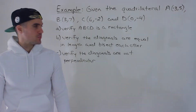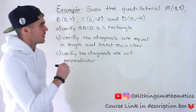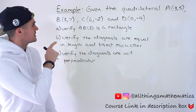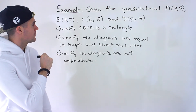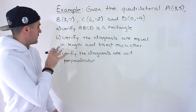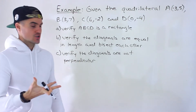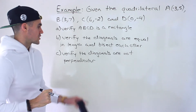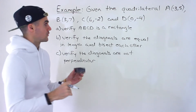Welcome back everyone, Patrick here. Moving on to the next question dealing with quadrilaterals. We are given a quadrilateral with vertices A(-3, 5), B(3, 7), C(6, -2), and D(0, -4). We have to first verify that this quadrilateral is a rectangle. Then in Part B verify that the diagonals are equal in length and bisect each other. And in Part C verify that the diagonals are not perpendicular.